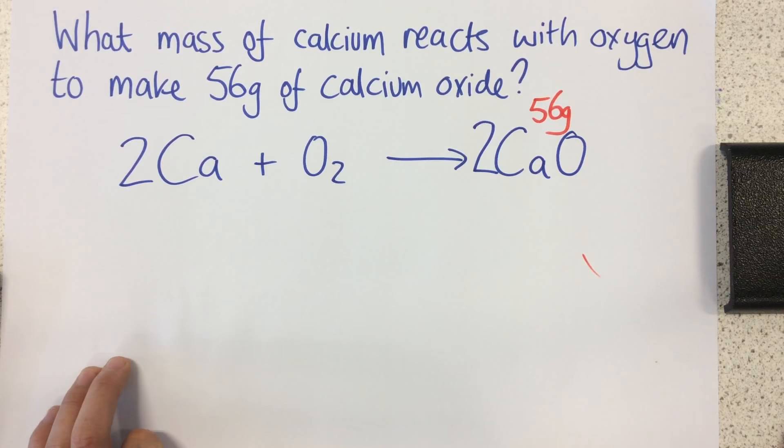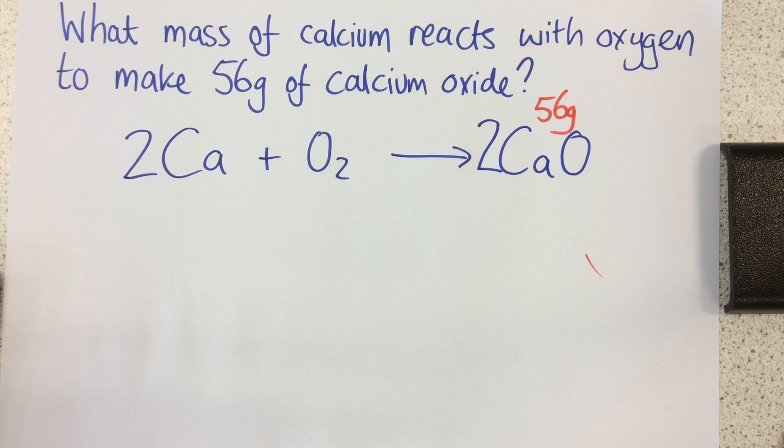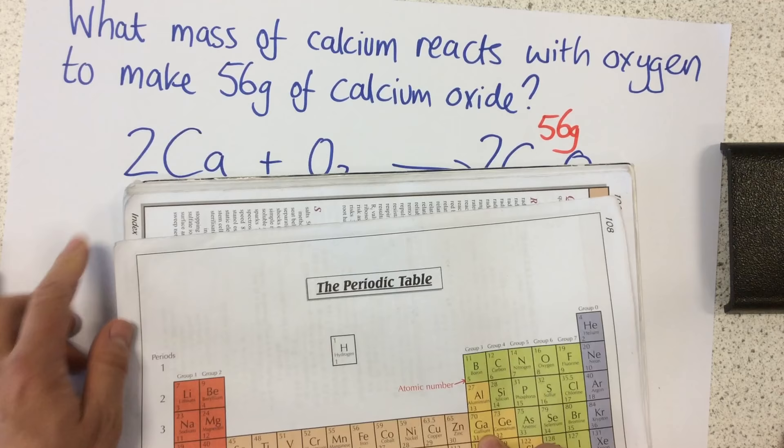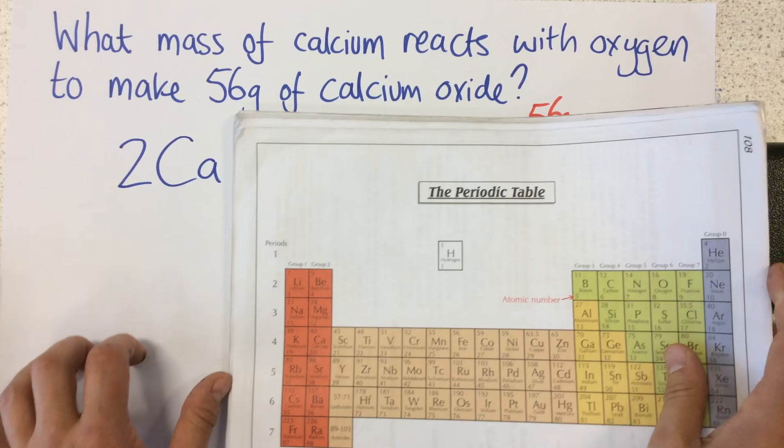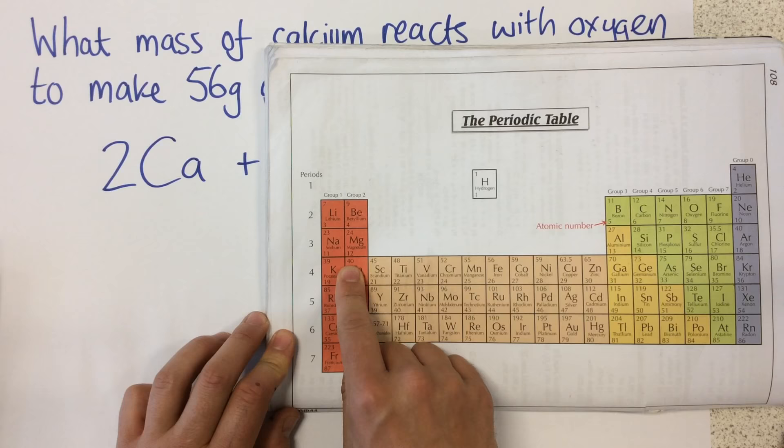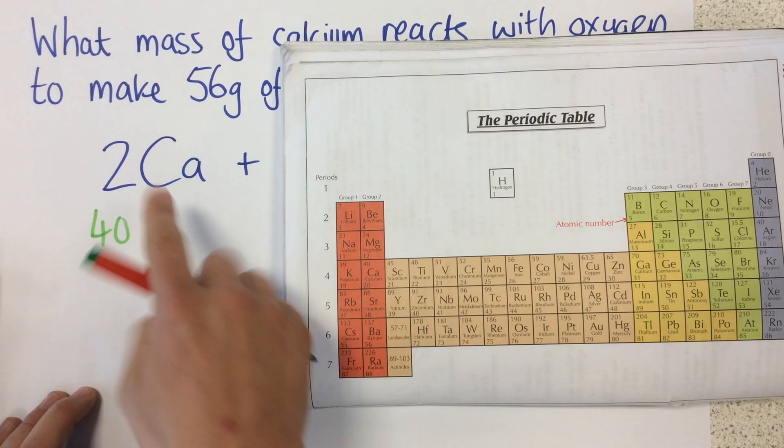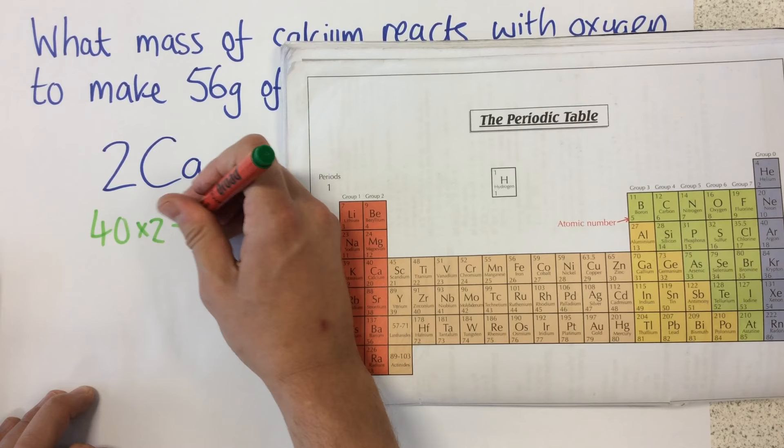So how do I go about this? The first thing I need to do is use my periodic table to find the relative atomic mass of calcium and the relative formula mass of calcium oxide. My relative atomic mass of calcium is 40. But I can see I've got two lots of those calciums, so it's going to be 40 times 2, which gives me 80.